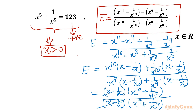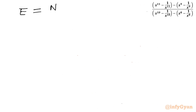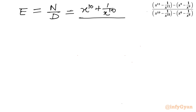Now I can take (x - 1/x) common from both the numerator and the denominator and cancel those brackets. The conclusion is that the given expression simplifies to (x¹⁰ + 1/x¹⁰) divided by (x⁹ + 1/x⁹). Let us now simplify the numerator and denominator separately.